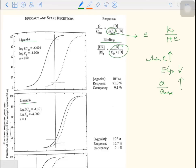For ligand A, the efficacy is 100. For ligand B, the efficacy is 1. Ligand A has a higher efficacy. So the fractional response is bigger for ligand A, even at the same level of fractional occupancy of the receptors. As you can see here, the fractional occupancy is 9.1%. But the response for ligand A is at 91%. For ligand B, it is at 16%.